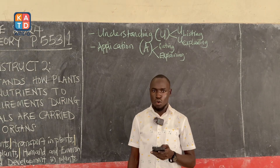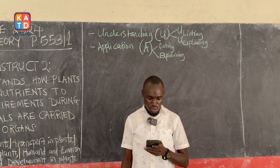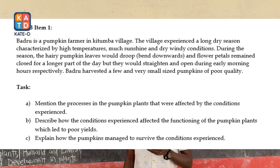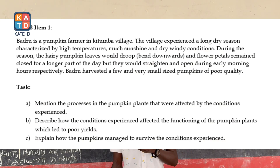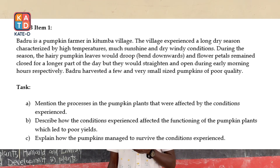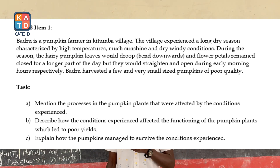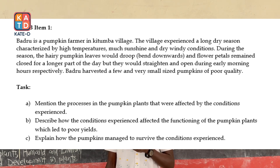Item 1 in UNEB says: Badru is a pumpkin farmer in Kitumbula village. The village experienced a long dry season characterized by high temperatures, much sunshine, and dry windy conditions.